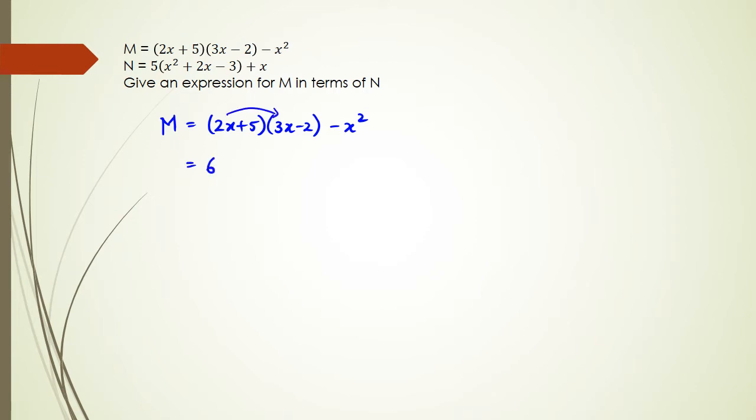So I've got 2x times 3x is 6x squared, 2x times minus 2 is negative 4x, 5 times 3x is 15x, 5 times negative 2 is negative 10. And of course I still have that minus x squared from earlier in the equation.